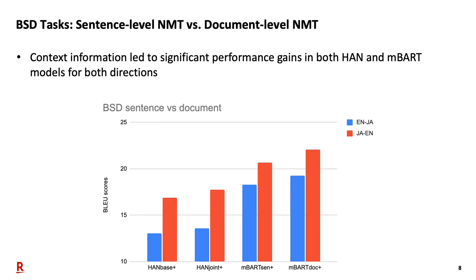In terms of ablation study, we compare the experimental results of the sentence-level NMT versus document-level NMT on BSD tasks. As a result, we found that the context information led to significant performance gains in both HAN and MBART fine-tuning models for both directions. Based on this result chart, we observed that the MBART document-level model simply surpassed the MBART sentence-level model by using additional Japanese-to-English subtitle corpus JESC, where over one BLEU gain was obtained for both directions.